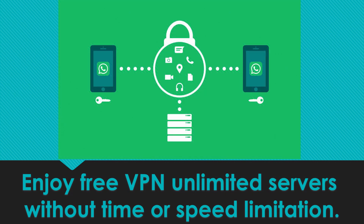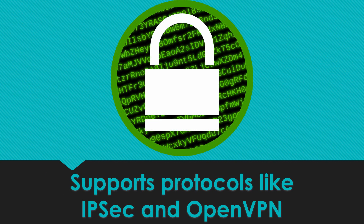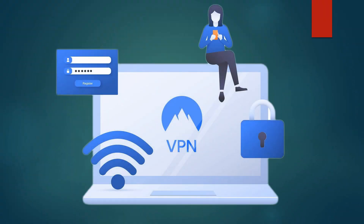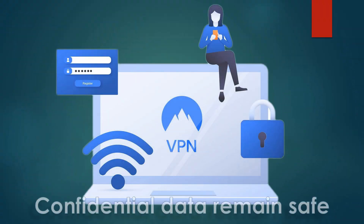Turbo VPN secures your connection with AES-128 encryption and hides your IP address on the free plan. Turbo VPN claims that your device will be protected with bank-level encryption and other protocols like IPsec and OpenVPN.